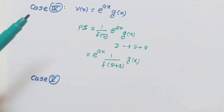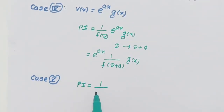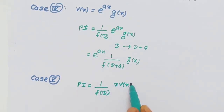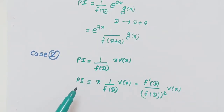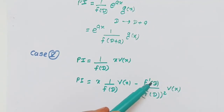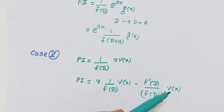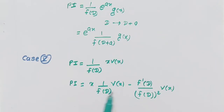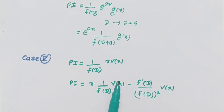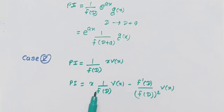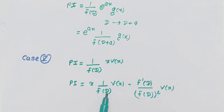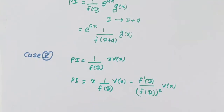Case number five: if PI is in the form of one upon f(D) times x times v(x), then PI equals x times one upon f(D) times v(x), minus f'(D) divided by [f(D)] squared times v(x). Depending on the form of v(x), we then apply the relevant case: if v(x) contains sin or cos, replace D squared by minus a squared; if it contains e raised to power x, replace D by a.